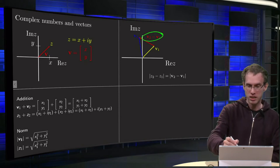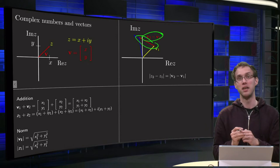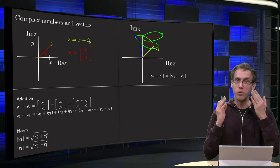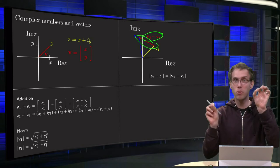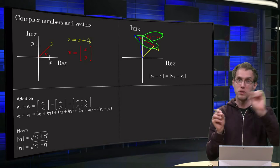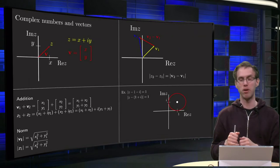The norm of that vector is exactly the length of that vector over there, is the distance between the two complex numbers z1 and z2, so we can view the distance between two complex numbers as the norm of the vector which is in between them, and we can use that property for example in this example over here.